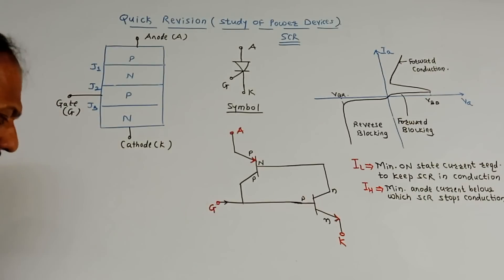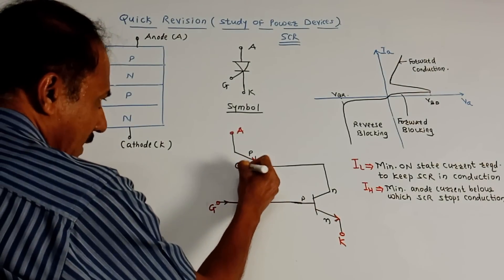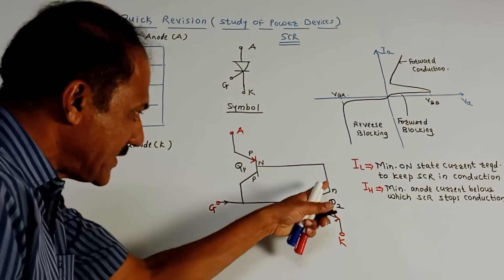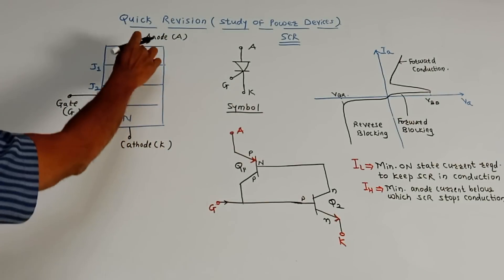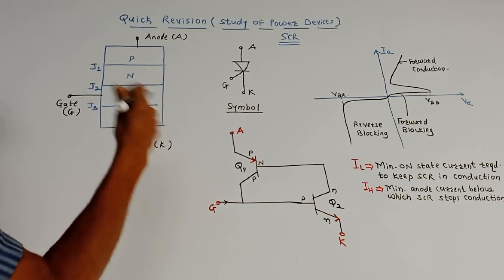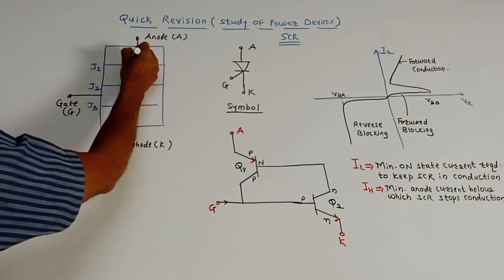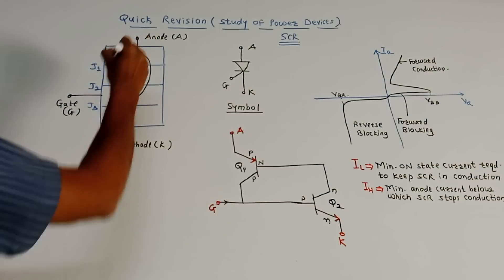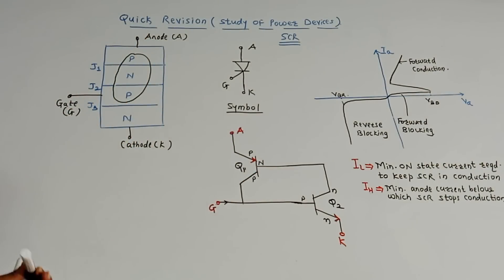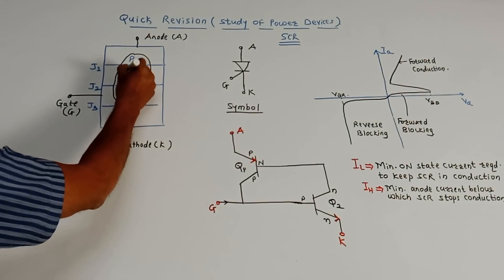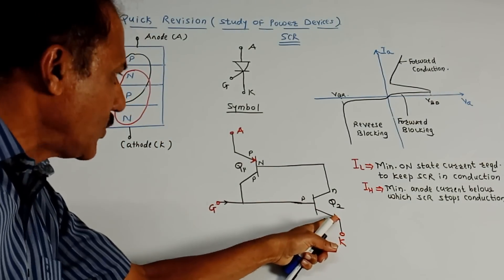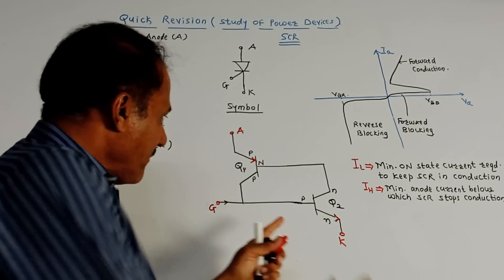Now, about the two transistor model: the first transistor Q1 is a PNP transistor, and Q2 is an NPN transistor. In the basic diagram, if you divide the SCR into two transistors, the upper part — P, N, P — is transistor Q1 (PNP), and the second group — N, P, N — is treated as transistor Q2.